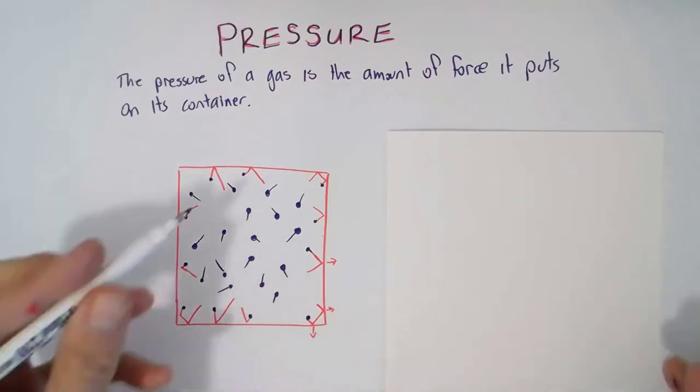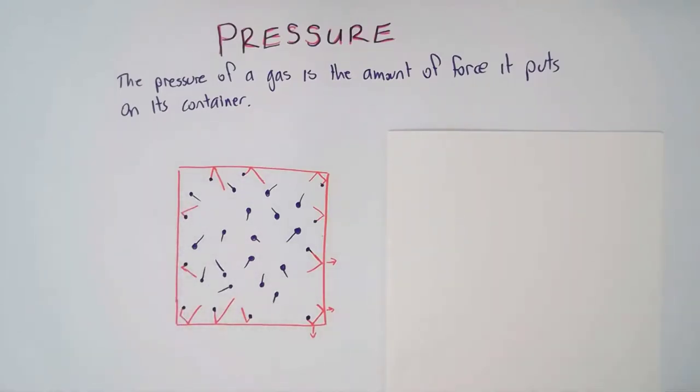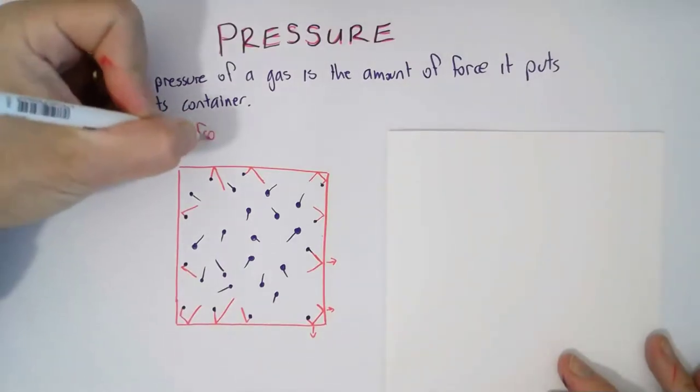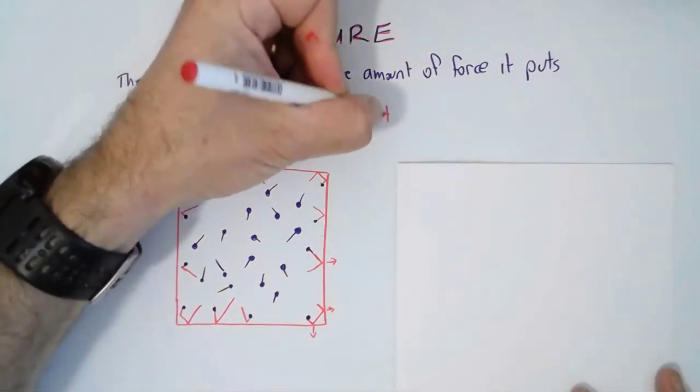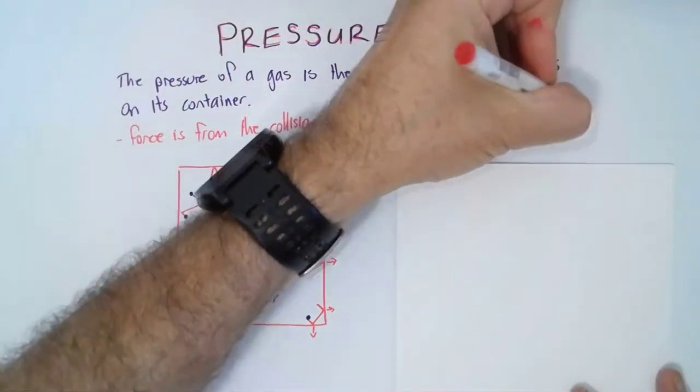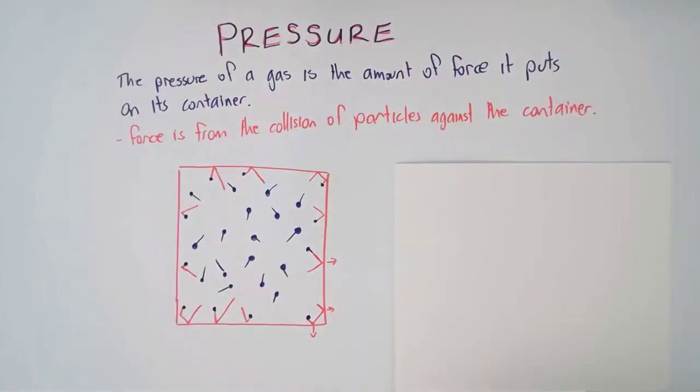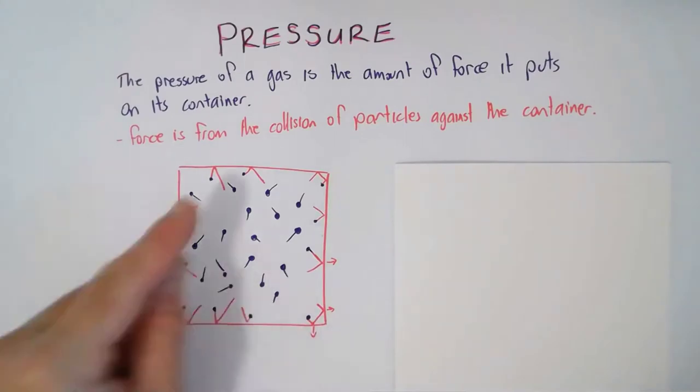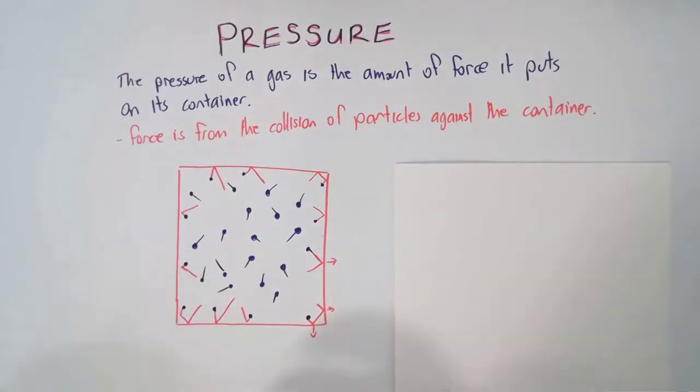The force comes from collisions of particles against the wall of the container. That's where the pressure and the force actually comes from - the collisions of the particles, because the particles of gas are always moving.